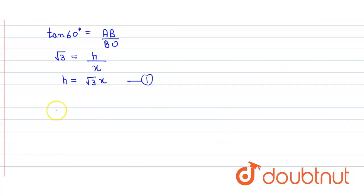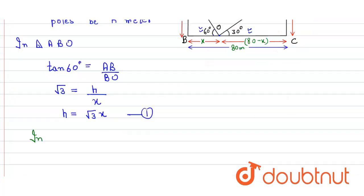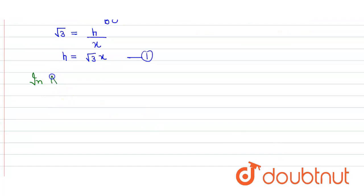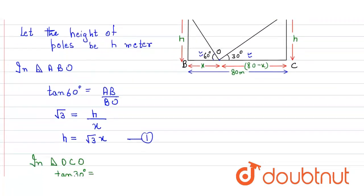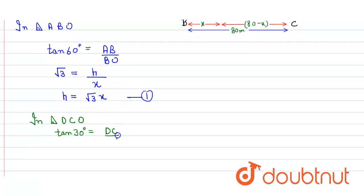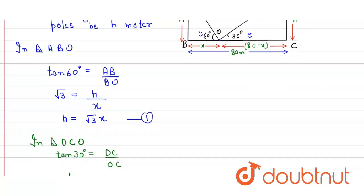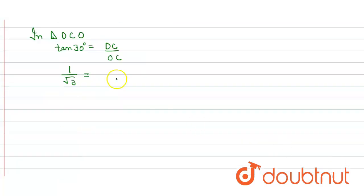Similarly, in the other right angle triangle DCO, we apply the trigonometric ratio. tan30° equals DC upon OC. The value of tan30° is 1 upon √3, equals H divided by 80 minus X. So from here we get 80 minus X equals √3 H.